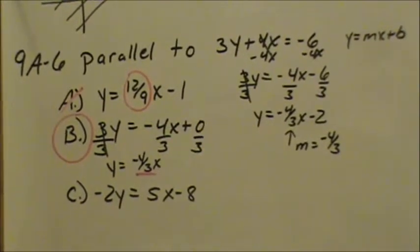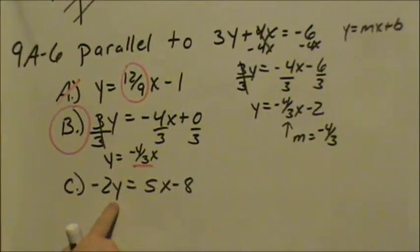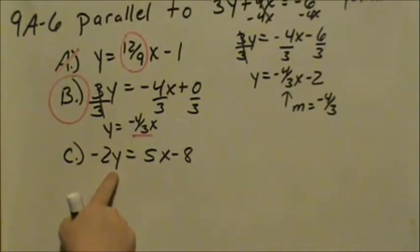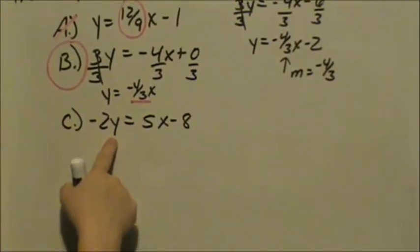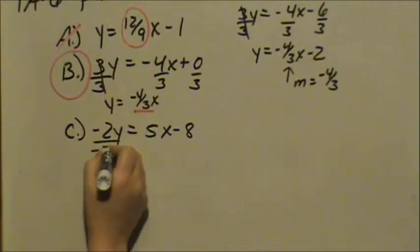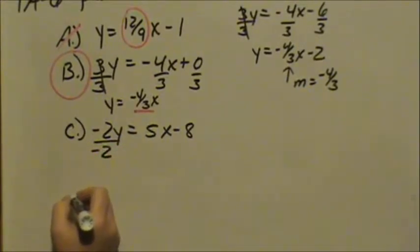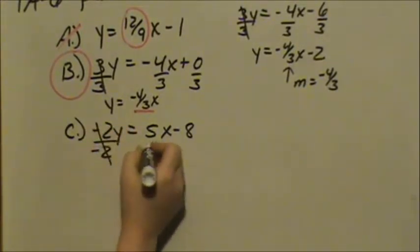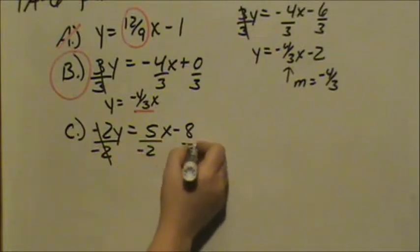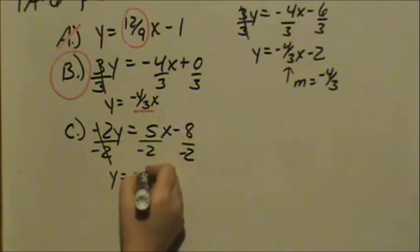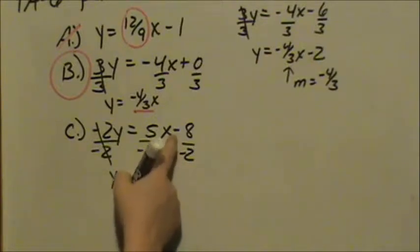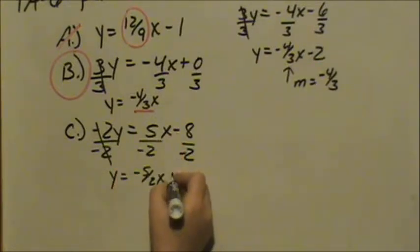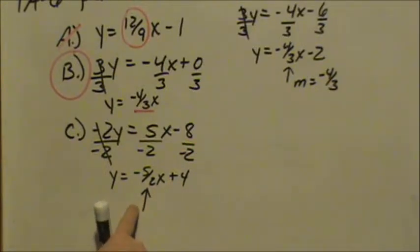Now we look at C. This is not in slope intercept form. It needs to be in slope intercept form, so we can see what the slope is. So we need to get rid of this negative 2, so we divide by negative 2. If we divide that by negative 2, we have to divide everything by negative 2, which would give us y equals negative 5 halves x and negative 8 divided by negative 2 is a positive 4. Our slope is negative 5 halves. That slope is not the same as negative 4 thirds, so that is not parallel.